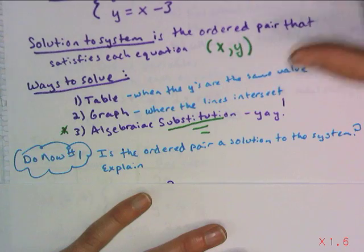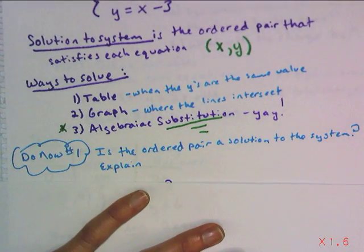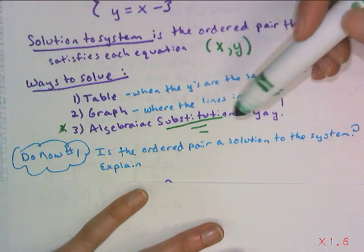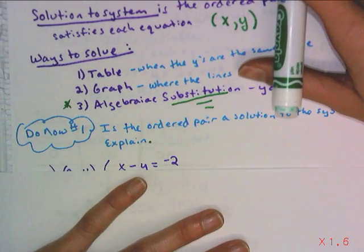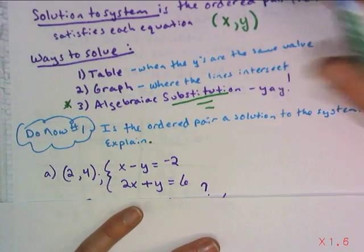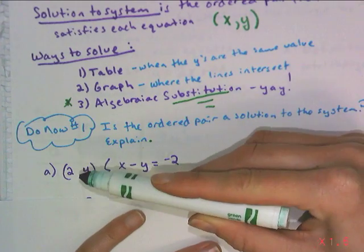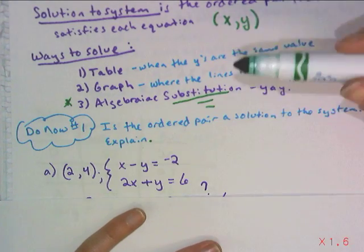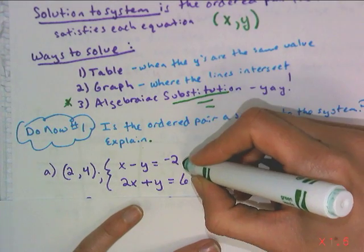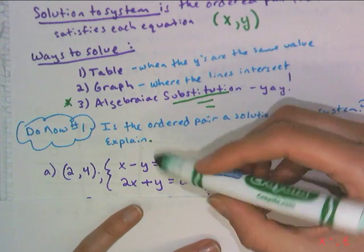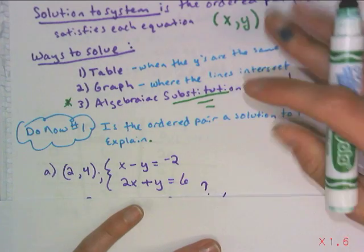So do now number one, just so you understand: is this point that I'm going to tell you a solution to the system? And then I want you to tell me why or why not. Here's your system, and I'm asking you, is the point (2,4) a solution to the system? Well, if it is, it's going to plug in and make the first equation true, and it's also going to make the second equation true.